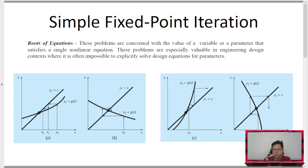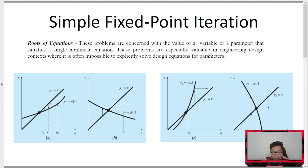Now, this time, we will introduce a method which is an open method. Last time it was a closed or bracketing method because we have a lower boundary and upper boundary. This time, in simple fixed point iteration, this is one of the open methods I'll discuss. After this, we will also discuss Newton-Raphson. Basically, in simple fixed point iteration, we still have a non-linear equation. However, since this is an open method, our initial guess will actually be only one — unlike the bracketing method where we have two: XL and X sub U.